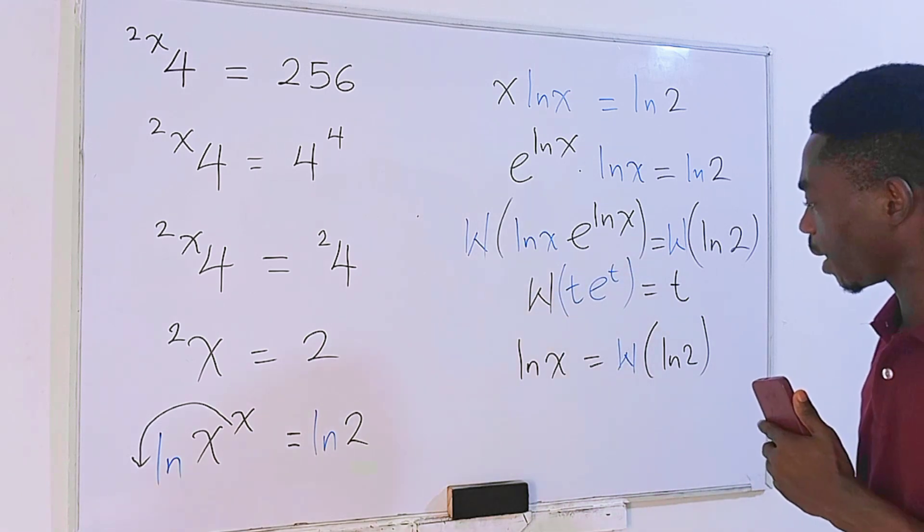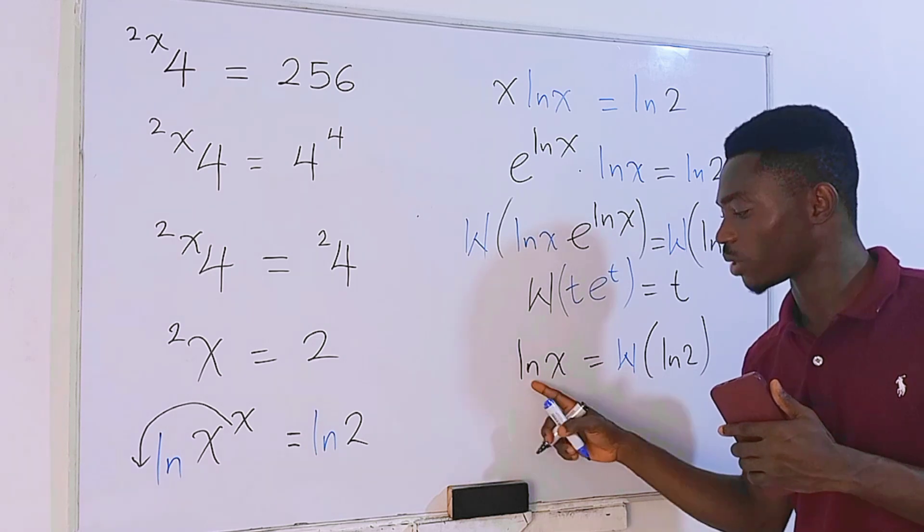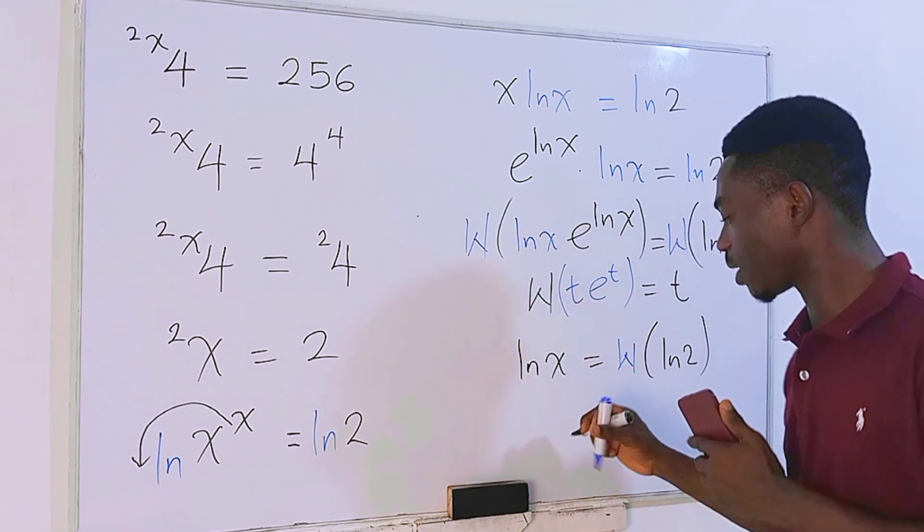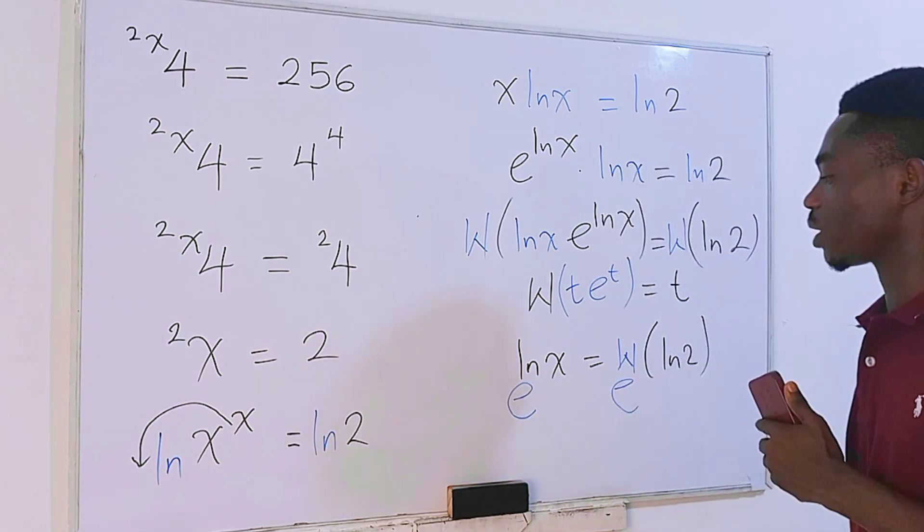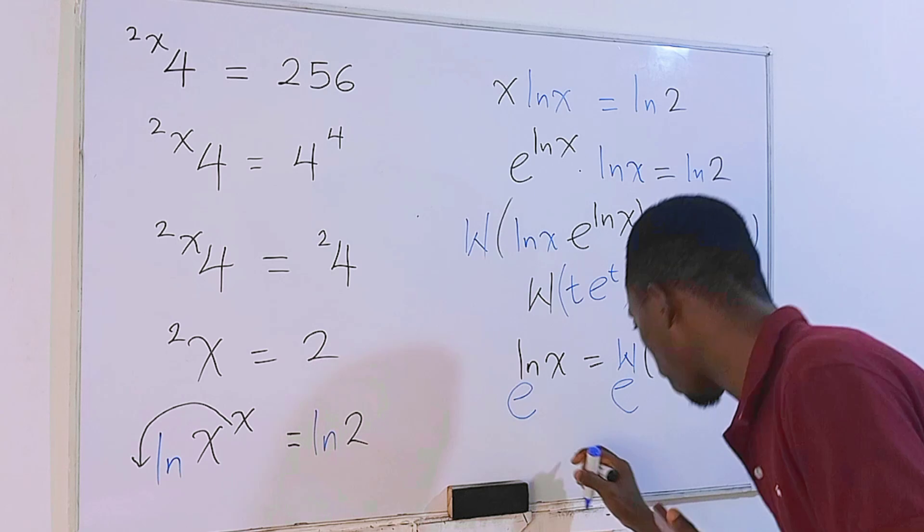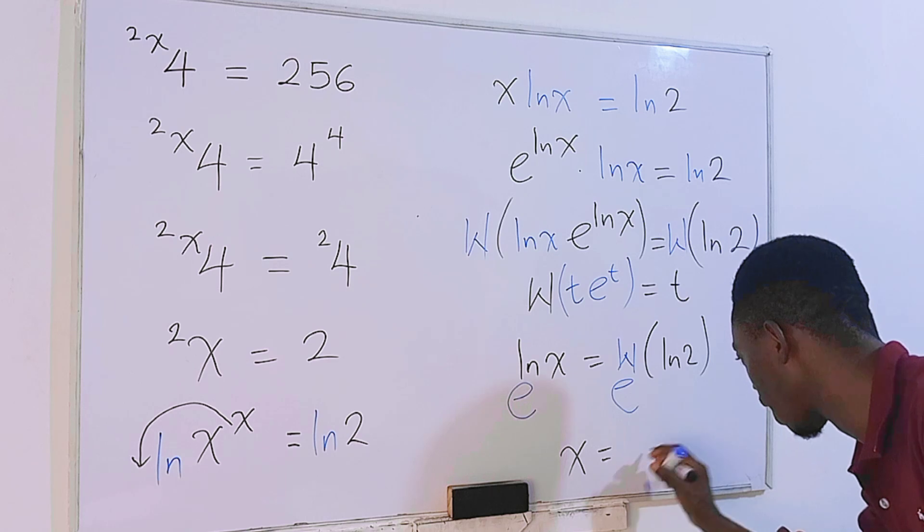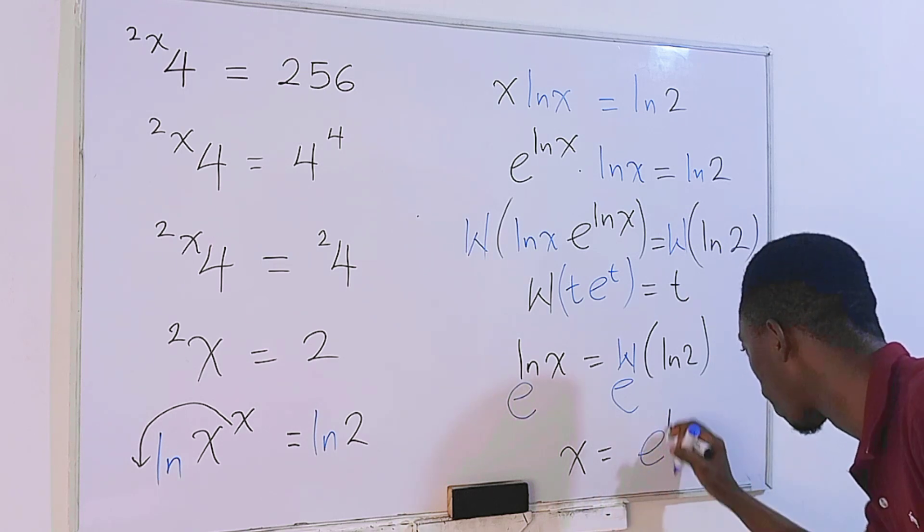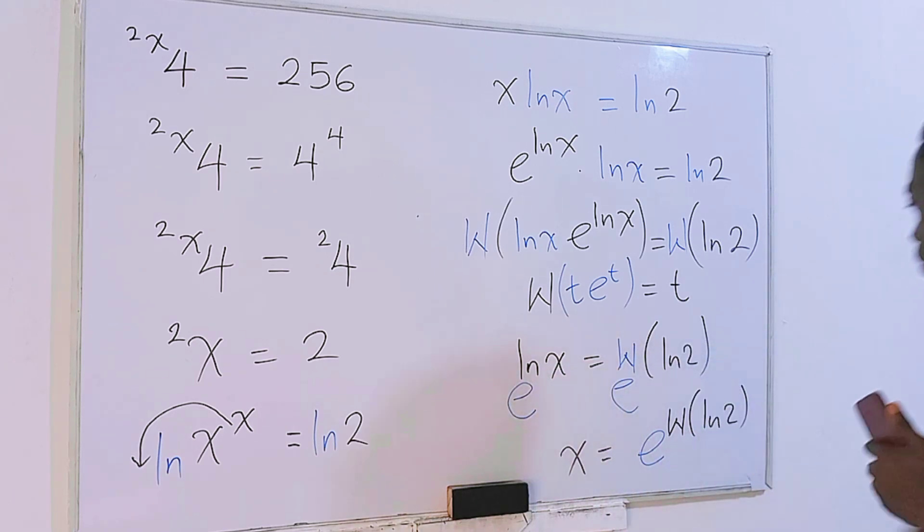Now it seems there's a problem again. We are looking for x and not ln of x. How can we get rid of this ln? To get rid of this, we need to take e on each side of the equation so that this e will cancel this and we'll get our x back. So we're going to have x equals e raised to the power W of ln of 2.